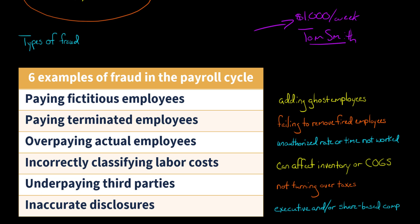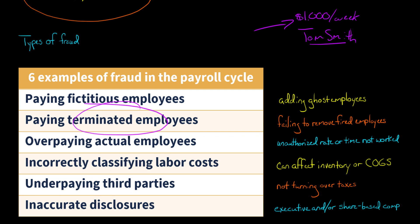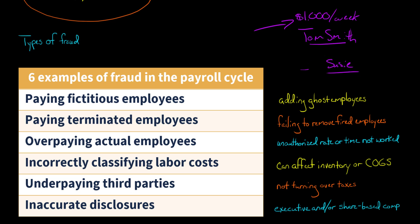A related fraud would be, instead of making someone up like Tom Smith and adding them to the payroll, keeping someone who has been terminated or fired from the company and just leaving them on the payroll. So let's say Susie actually worked for the company and was fired. Instead of removing Susie from the payroll, you keep Susie on the payroll and then just take the checks.